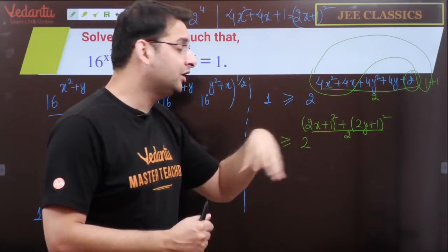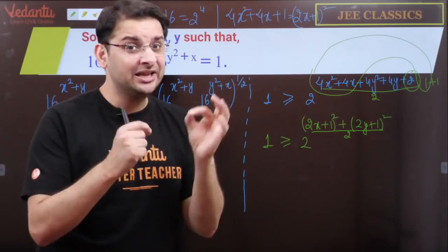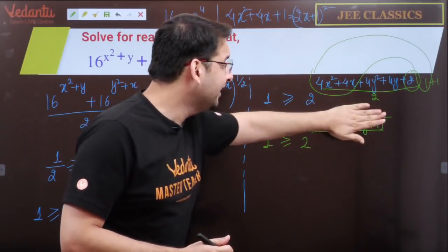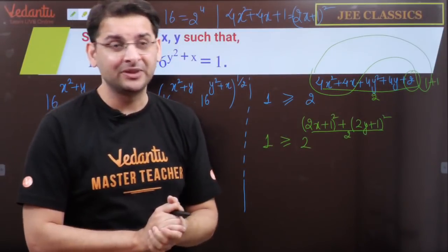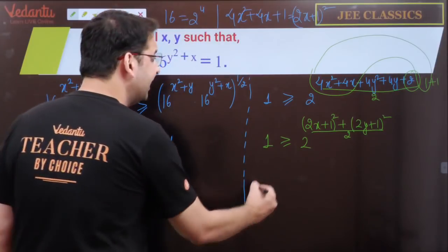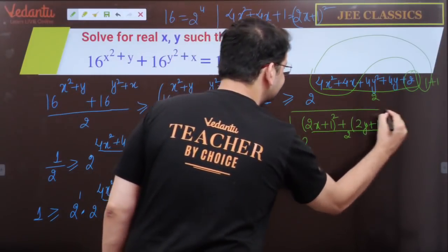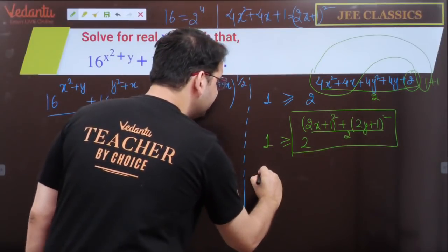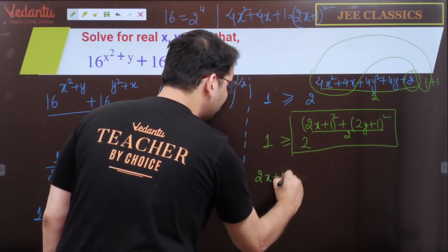One thing we can notice about (2x+1)² and (2y+1)² is that their whole squares are always greater than zero. So if we consider only the right hand side, the power would be (2x+1)² + (2y+1)² divided by 2.